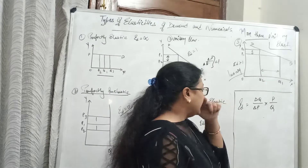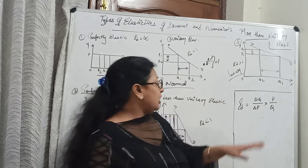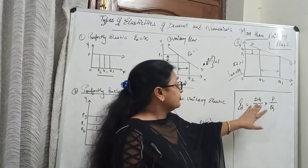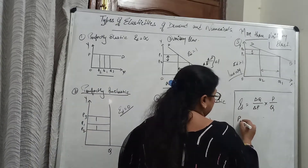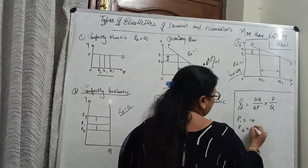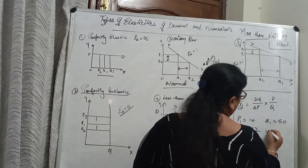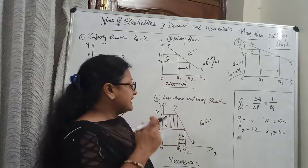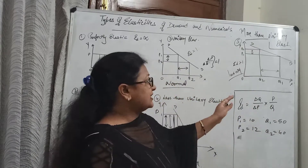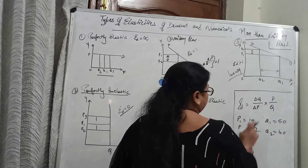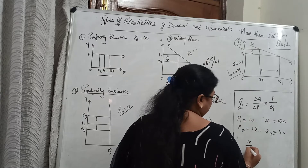I have written a small formula. Elasticity of demand is equal to change in Q divided by change in P, multiplied by P divided by Q. In the formula, the change in quantity demanded is divided by change in price, then multiplied by original price upon original quantity. Let's take an example: suppose the price was 10 rupees and it changed to 12 rupees. The quantity demanded was 50 units. So change in Q is Q2 minus Q1 which equals 10, and change in P is P2 minus P1 which equals 2.